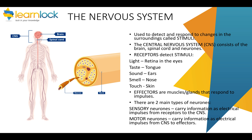The nervous system is basically used to detect and respond to changes in the surroundings, and we call those changes stimuli. The central nervous system is made up of your brain, the spinal cord — specifically in mammals and vertebrates — and neurons. Neurons are a type of nerve cell.